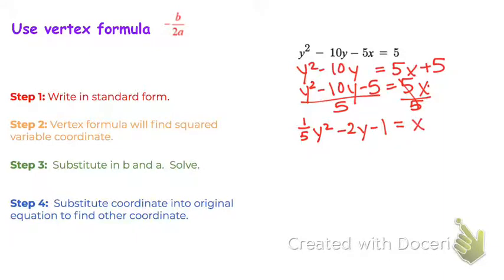So now for our vertex formula. What is being squared is the y. So our vertex formula is going to find the y coordinate of our vertex. And now we just need to substitute in the a and b. Remember, the a is what's in front of the square, so a is 1/5, and the b is what's in front of just the y, so b is negative 2.